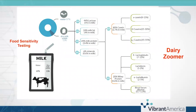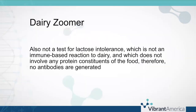The dairy zoomer tests at the peptide level. Food sensitivity testing tests the extract of the food — dry milk solids with residues of sugars, fats, and proteins. The dairy zoomer takes each of those proteins — caseins and lactoglobulin — and breaks them down into individual peptides, testing for thousands of peptides within each protein. The dairy zoomer is not a test for lactose intolerance, which is not an immune-based reaction to dairy. Lactose intolerance does not involve protein constituents of food; therefore, no antibodies are generated, and there will be nothing on this test to indicate it.